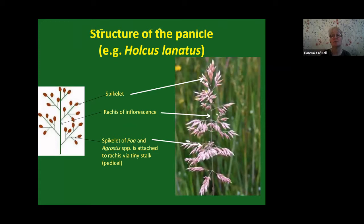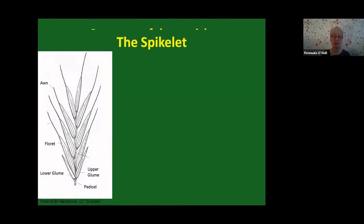The flower itself consists of the female pistil, male stamens, and in the case of grasses, two little scales called lodicules, which are probably remnants of sepals and petals. Here the panicle shown is Holcus lanatus — quite a good one to illustrate a nice chunky head. You have individual spikelets held on the inflorescence, with the central stem called the rachis, and each spikelet attached to the rachis via a tiny stalk. The spikelet has a lower glume and an upper glume enclosing all the florets.